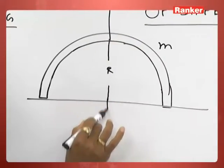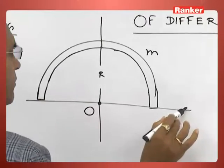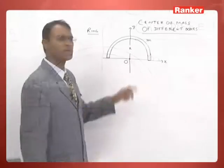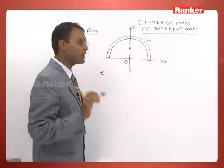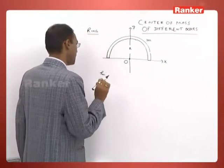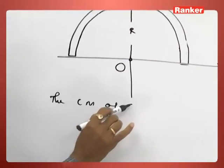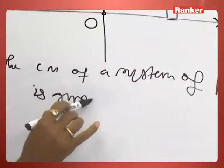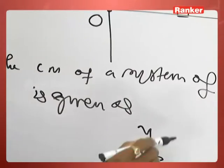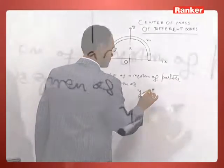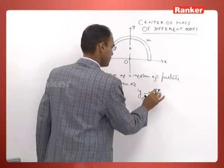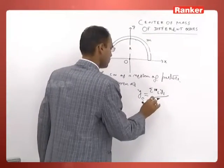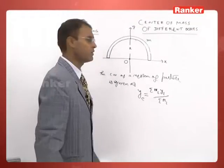To calculate the center of mass of the ring, you have to take the origin of the coordinate system — this is the x axis, this is the y axis. For the sake of mathematical simplicity, I have taken this point as the origin. The formula for the center of mass position of a system of particles is given as y_c equal to the sum of m_i times y_i upon the total mass of the system.